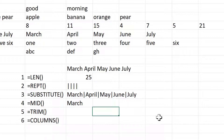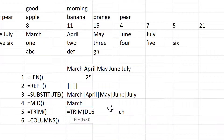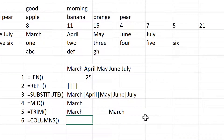Then with the TRIM formula, if I add in a bunch of extra spaces here and then type the word March, the TRIM formula can be used to get rid of all of the extra spaces. So if I select this cell here and press enter, it gets rid of all of the extra spaces at the beginning and I end up with just the word March.